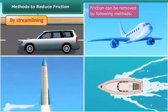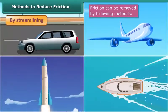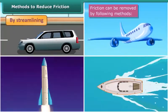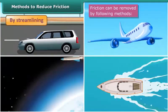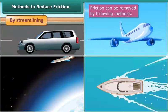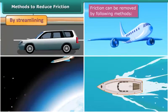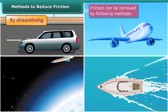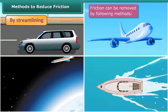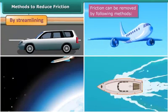By streamlining. The bodies of cars, aeroplanes and rockets are streamlined to reduce air friction. The bodies of boats and ships are also streamlined to reduce the friction of water.